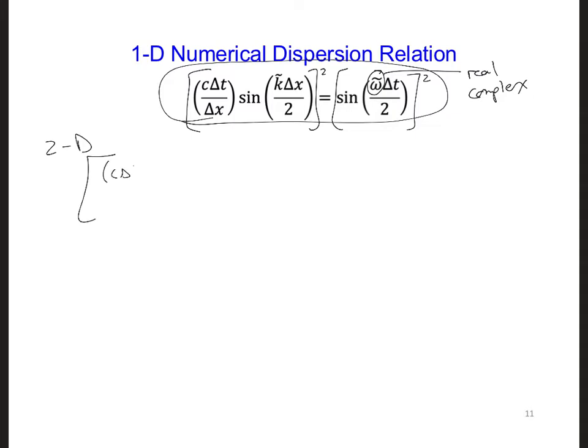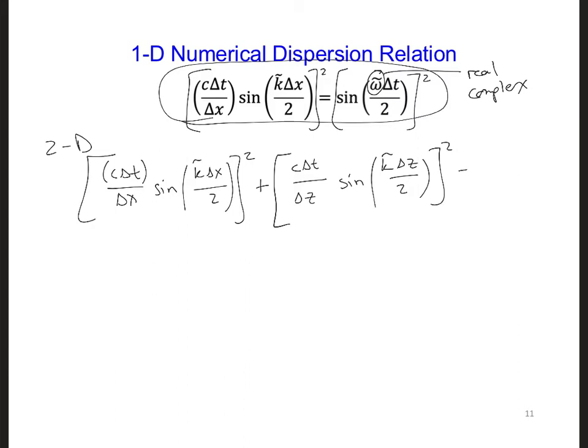So here I'm going to write c delta t over delta x and sine k tilde delta x over 2. This is all squared, and I'm going to add on to here another term that has the same form, c delta t, but we're going to have delta z and sine k tilde delta z over 2, and that is squared. Otherwise, the right side is the same, sine squared omega tilde delta t over 2.